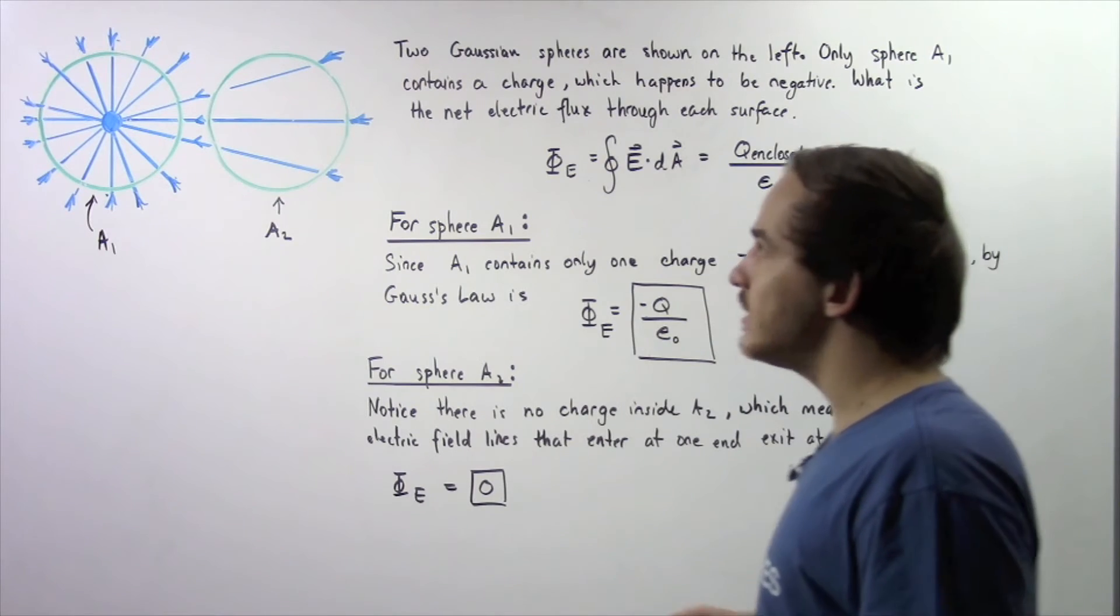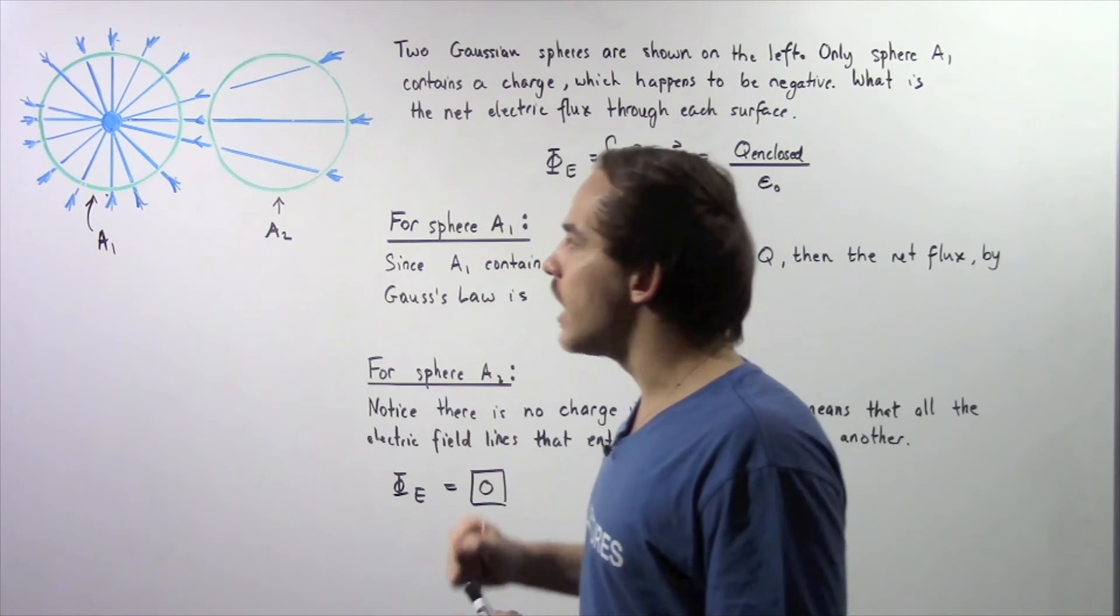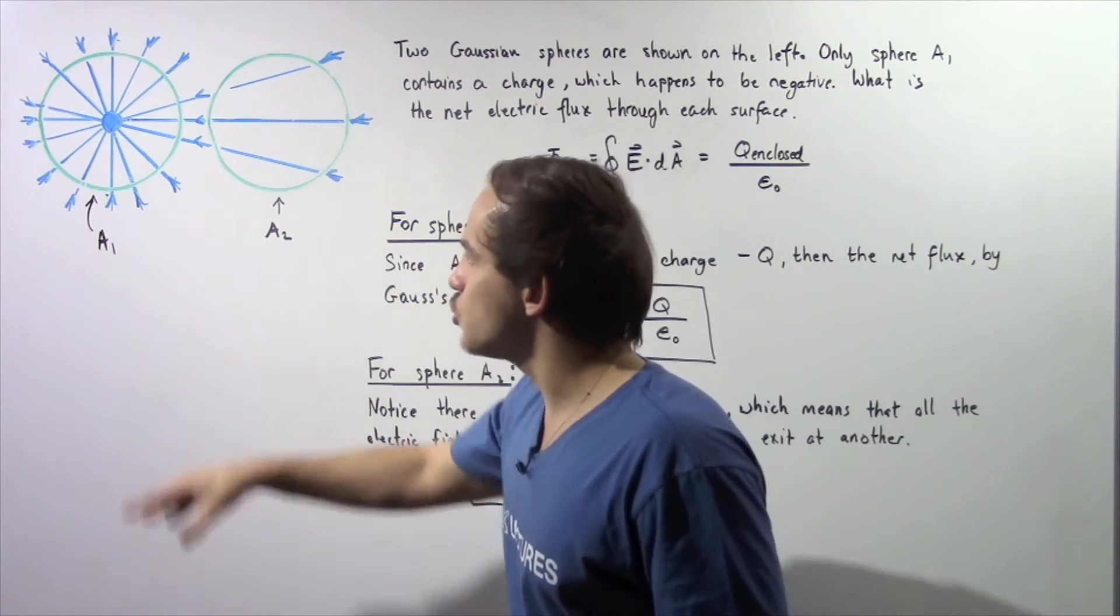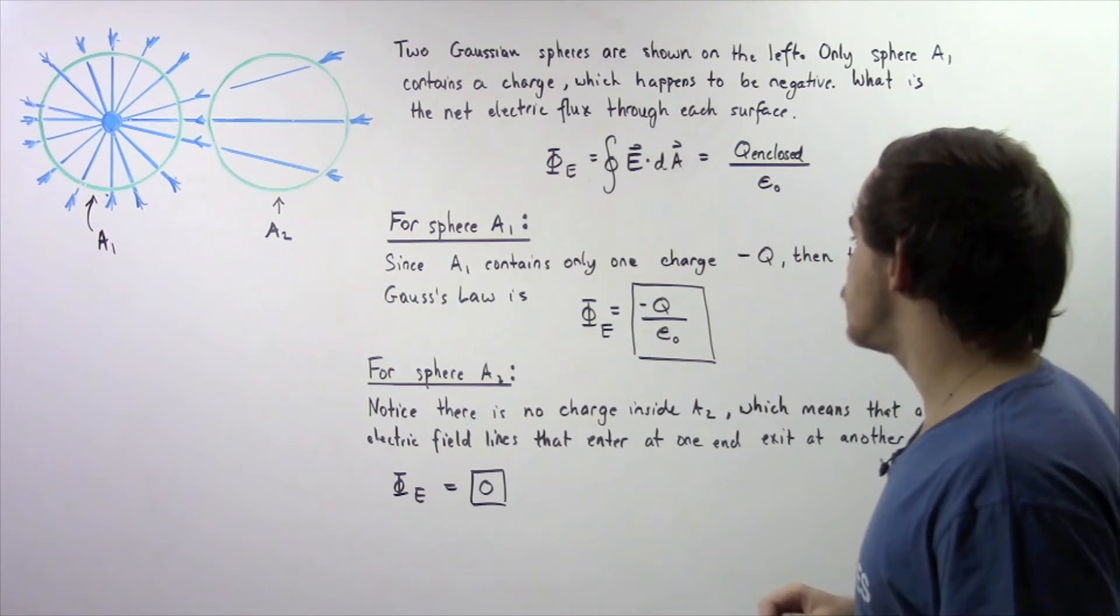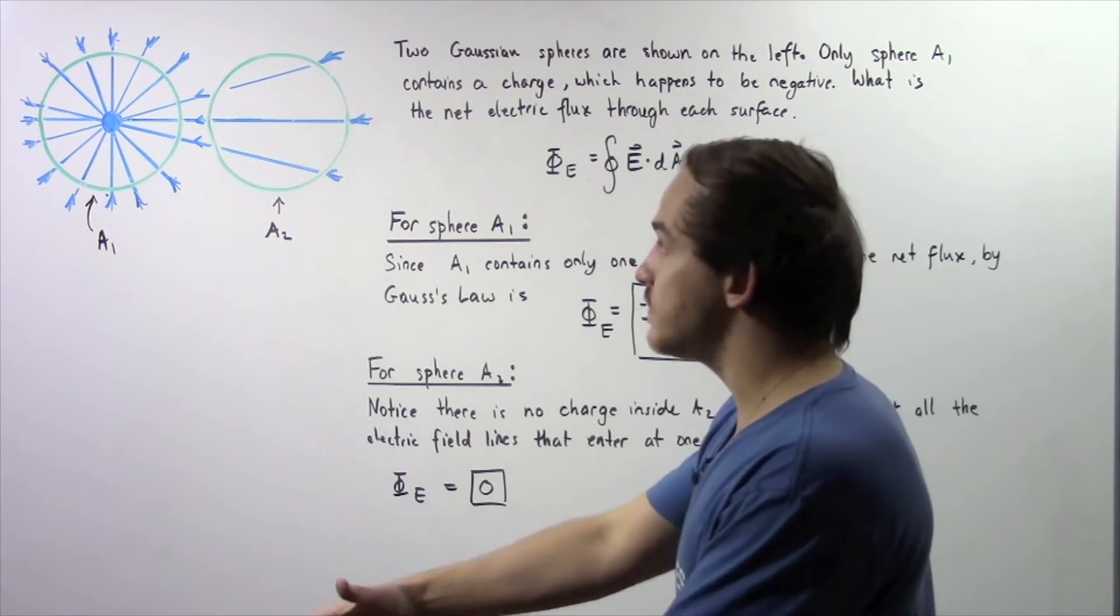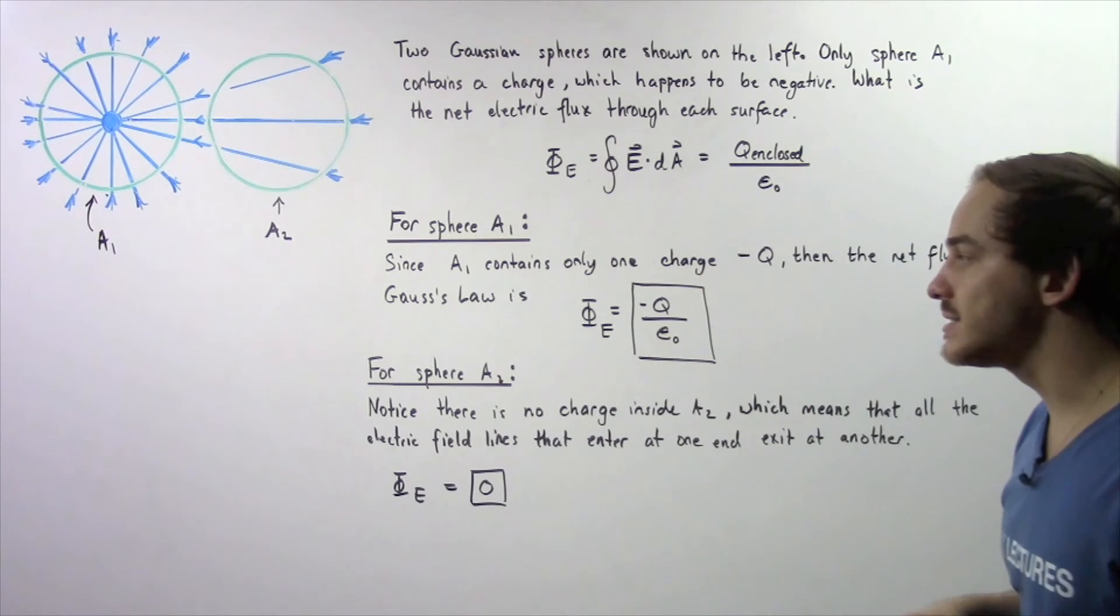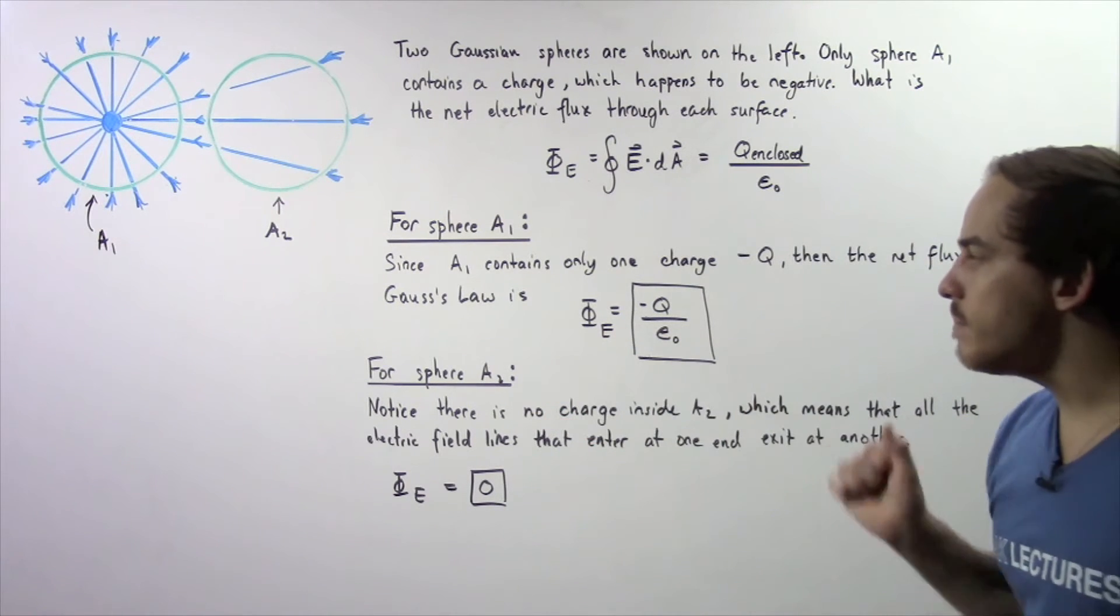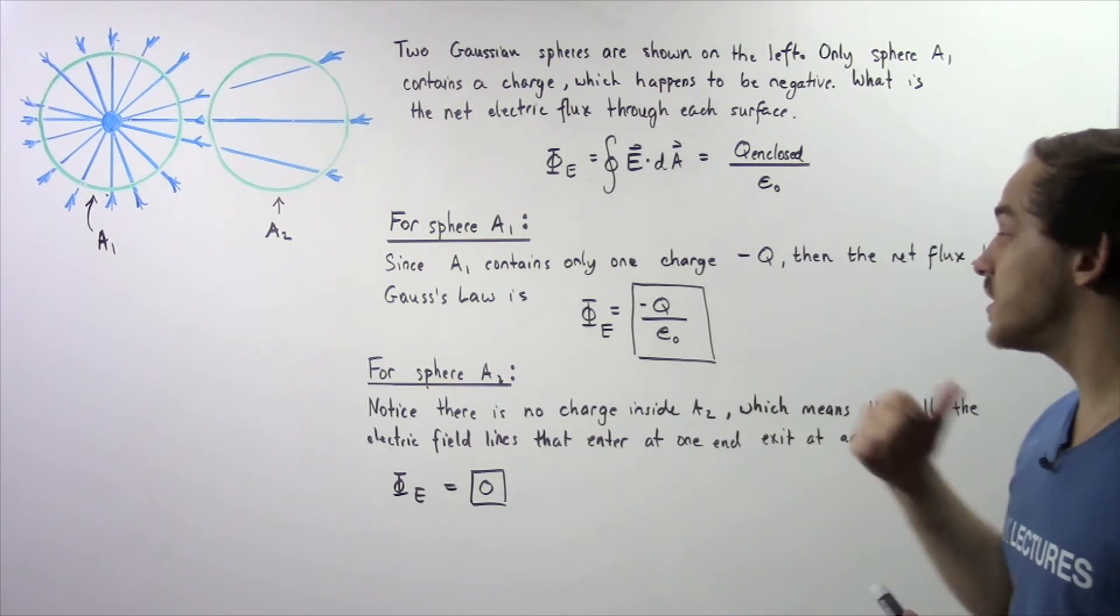And the negative simply means that the electric field lines are going into our sphere as shown. If they were coming out of the sphere, this would have been positive. Now, what about for sphere number or sphere A2?